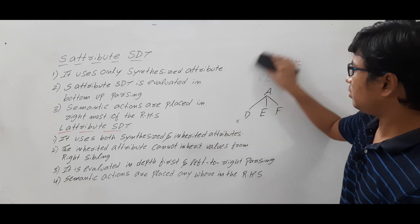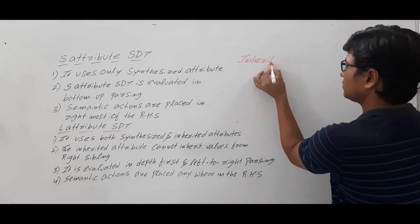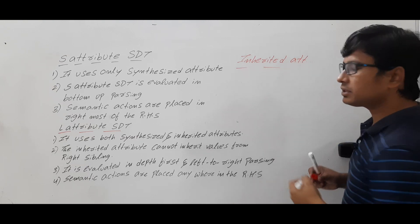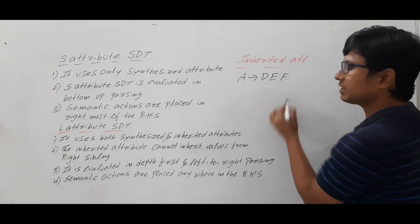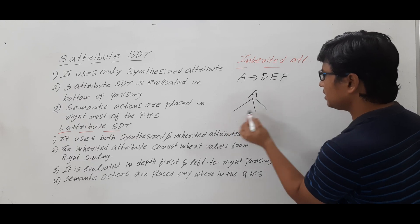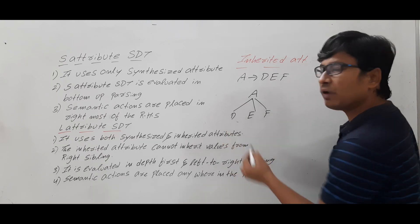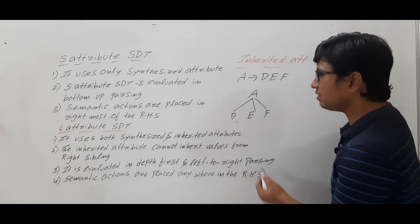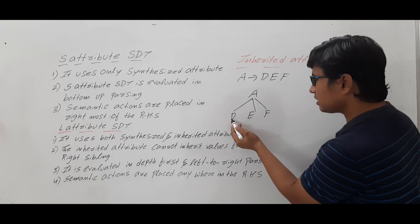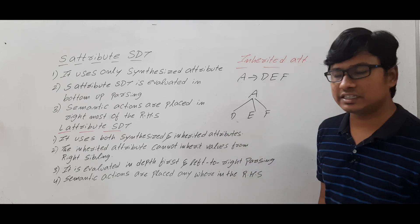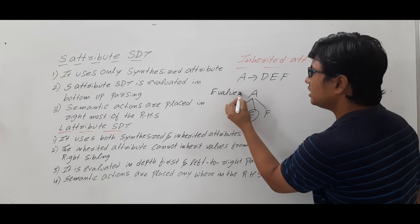Now let me discuss about another type of attribute: inherited attribute. Taking the same production A → DEF, when written in the parse tree, A generates D, E, F. For the inherited attribute, the child value — where D, E, F are the children and A is the parent — is considered. For E, the siblings are D (left sibling) and F (right sibling).